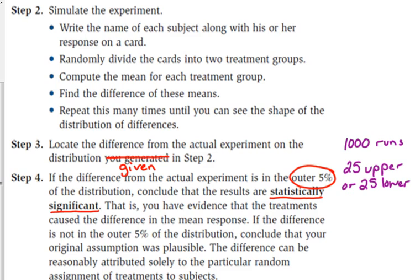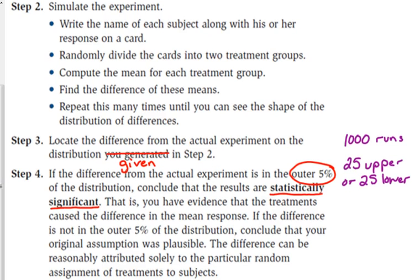Otherwise, your data is not statistically significant, and the difference could be contributed solely to the random assignment. In order to say that it's statistically significant, it's got to be in the outer 5%, so you split that on the two ends. If it's 500 runs, then you're talking in the upper 12, lower 12. That is where your difference has got to be.